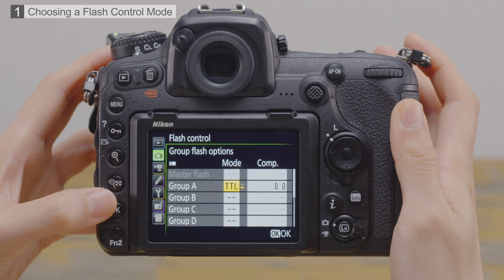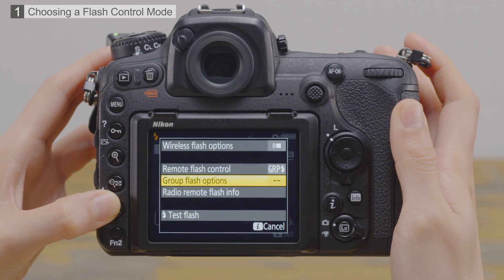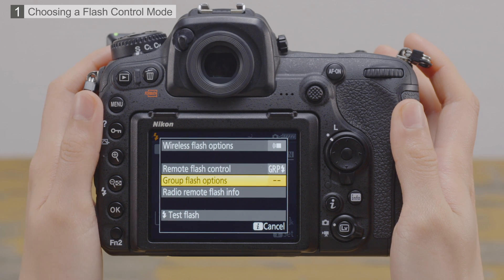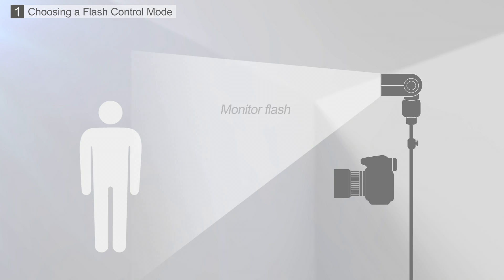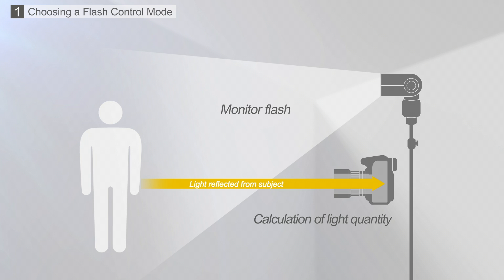Press OK to save your selection. In TTL, through the lens mode, the camera detects the light from the flash through the lens and adjusts the flash level accordingly. Now let's take pictures using a single remote flash in TTL mode.